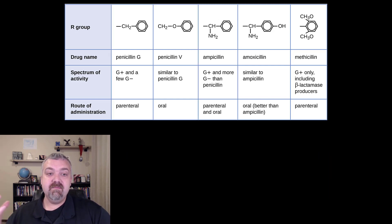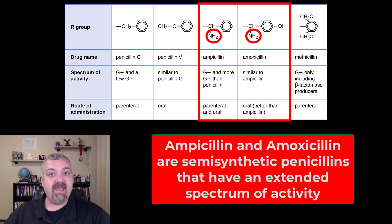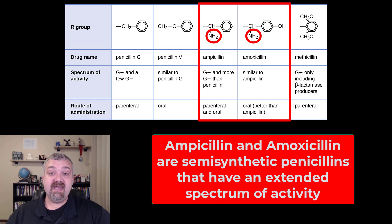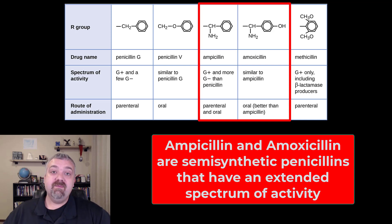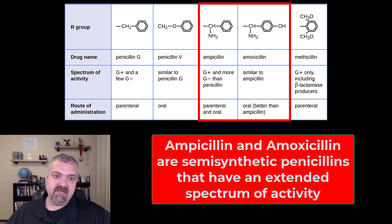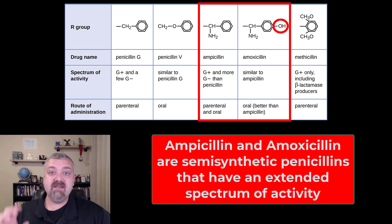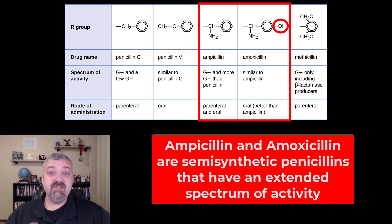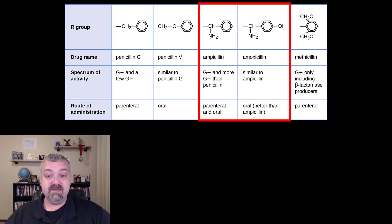Moving on to more R group changes: adding the amino group to the R group of ampicillin and amoxicillin created semi-synthetic penicillins — you start with natural penicillin and make changes, so it's part natural, part synthetic. These are called the amino penicillins. What the amino group primarily does is make them extended spectrum — they still kill gram-positive bacteria but can also kill more gram-negative bacteria than regular penicillin. Amoxicillin has an additional hydroxyl group, making it more stable in acid and giving it better oral absorption than ampicillin.